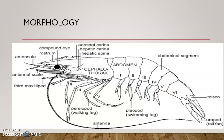Next, coming to the morphological characters, that is the external visible characters of the prawn. Basically, the prawn's body is divided into two parts: the cephalothorax — cephalo means head, thorax is the thoracic region. Any insect has a head region, a middle portion, then an abdomen. This middle portion is called the thorax. Here in the prawn, the head and the thorax are joined together. The segments are joined together to form a structure called the cephalothorax.